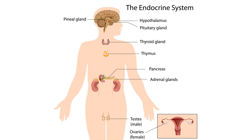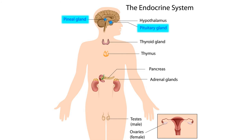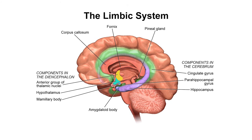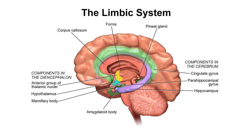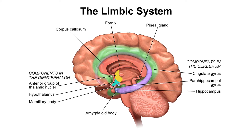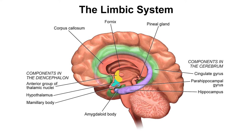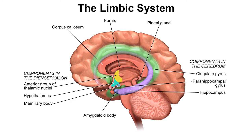Notice that at the height of the chakras are the pineal and pituitary glands, which are located squarely in the limbic system, which is in charge of hormone distribution that controls emotions.